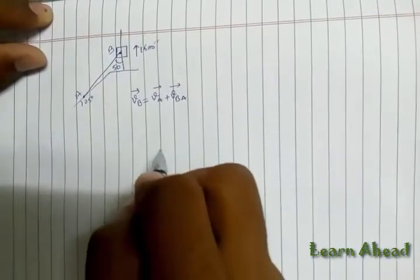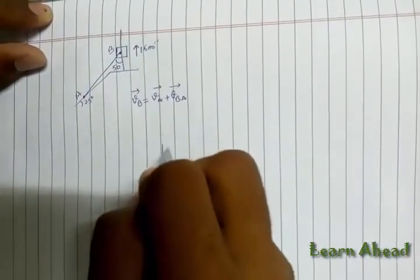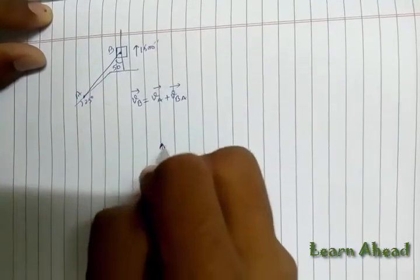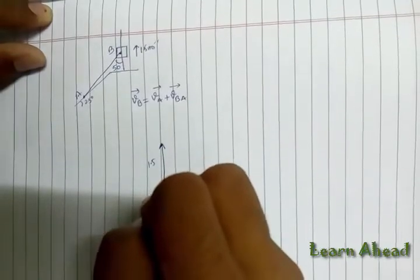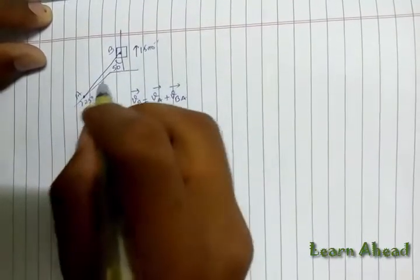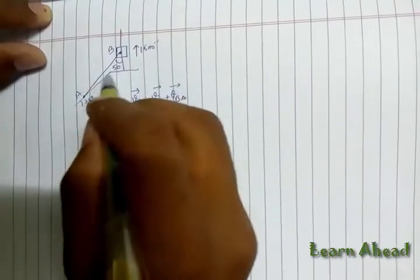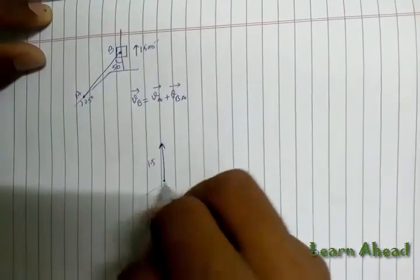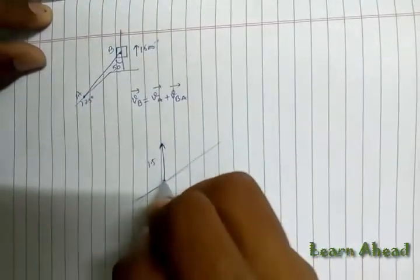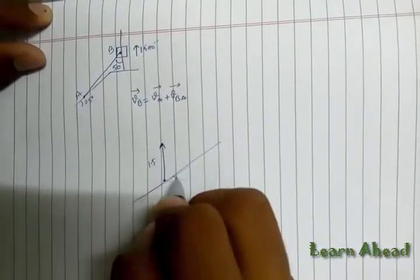So what I will do: I will first draw a vector representing the velocity of B in the upward direction. I know its direction, I know its magnitude 1.5. Now, as far as VA is concerned, I know it has to be along this inclined line. So I draw a line like this, passing through this point. So this is 25 degrees.